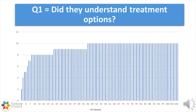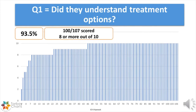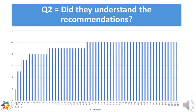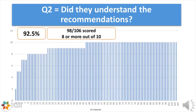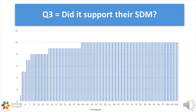Now for the results from our pilot test. 100 out of 107 patients scored 8 or more out of 10 and said they understood what treatment options were available to them. 98 out of 106 said they understood why a particular treatment was recommended. Over 93% said the Torbay Chart helped with their shared decision making conversations.